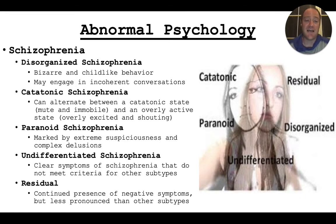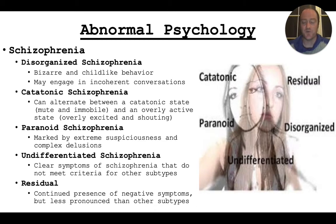Here are the five types of schizophrenia. Disorganized schizophrenia is when someone has very bizarre behavior but it doesn't necessarily fall into one category. Their thoughts, their speech, their behavior — it's all very disorganized. The conversations may be with someone else or with the voices that they hear. So it's very disorganized in both thought and action.